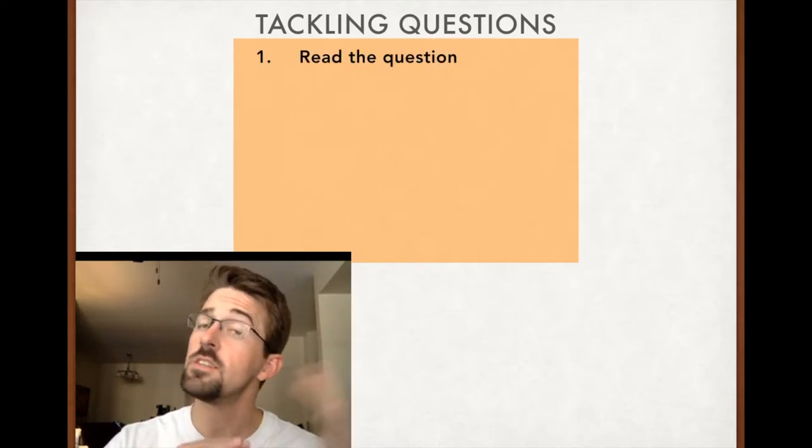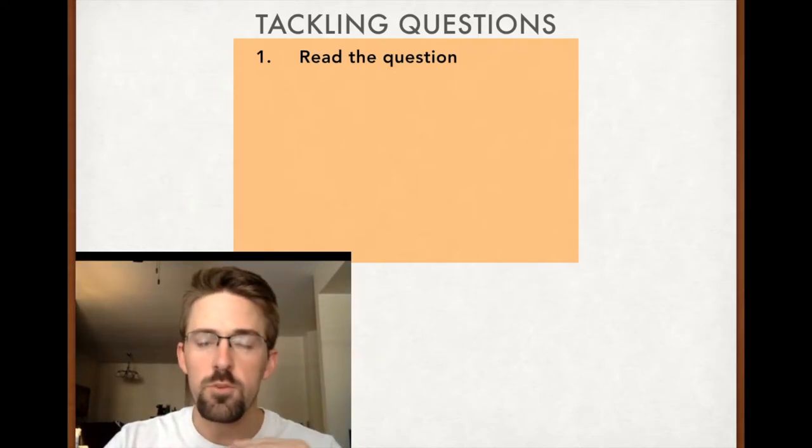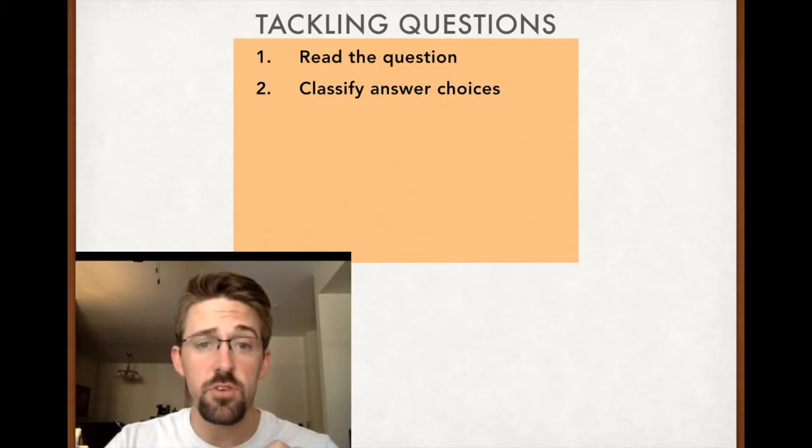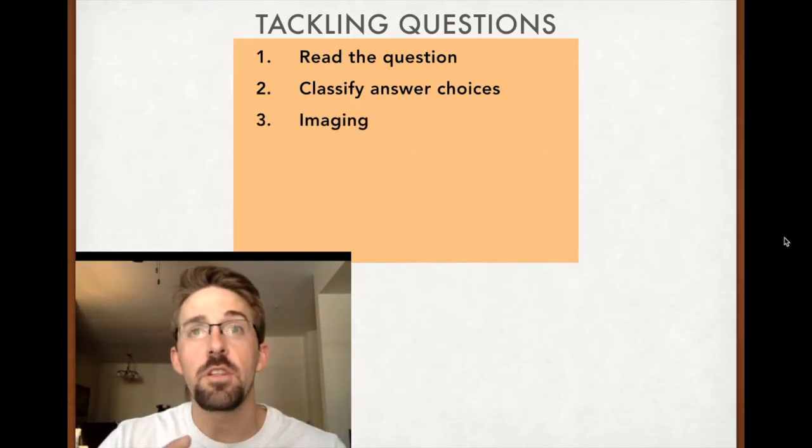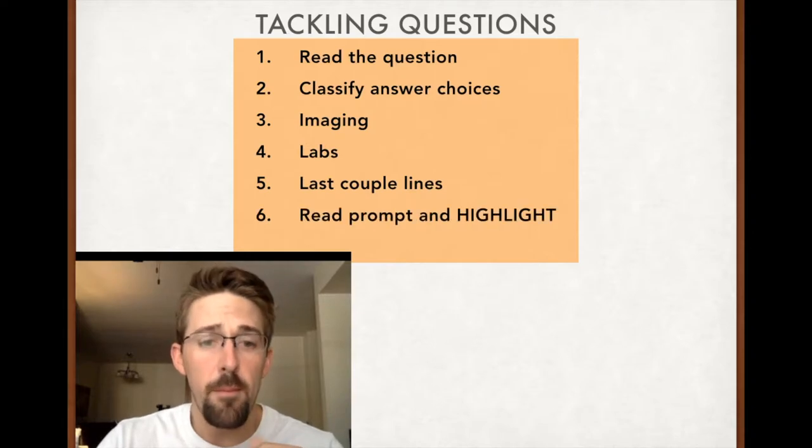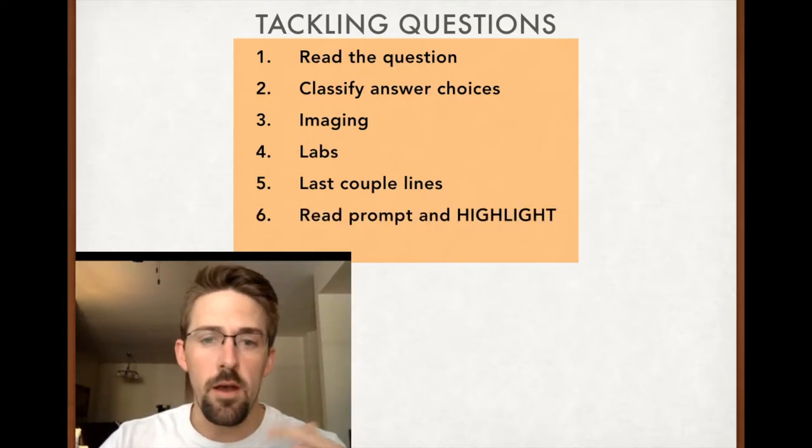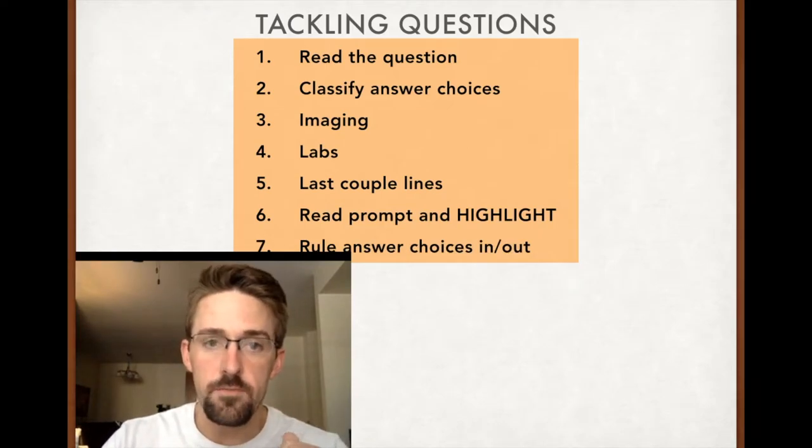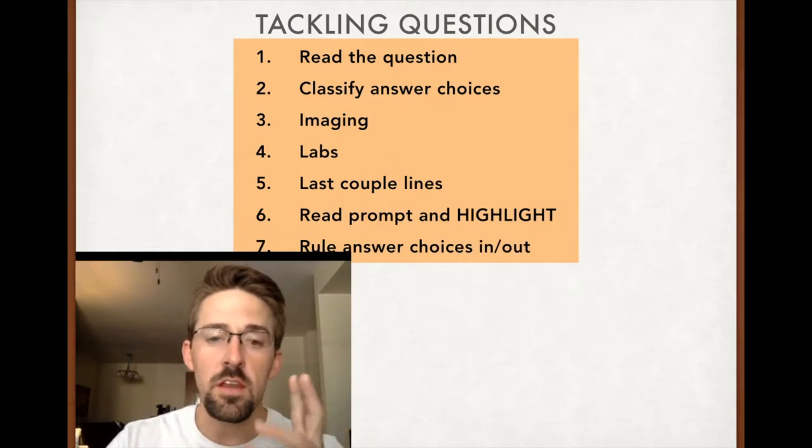The first thing you're going to do is read the question, not the stem, just the question. That gets you in the ballpark. Then you're going to classify the answer choices. What even are we dealing with? What area of medicine? Then you look at any imaging. Then you look at labs. Then you look at the last couple lines to see if anything's popping out. At that point, you finally read the prompt and highlight, and then you start ruling answer choices in and out. We're going to walk through each one of these individually.